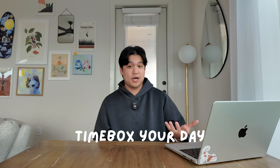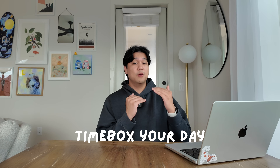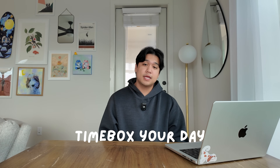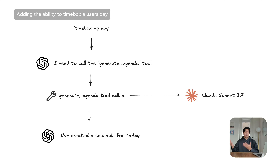The last thing I had it handle was the ability to time box your day. I thought this would be easy since it already has all the tools, but it was actually really challenging — I think because GPT-4o mini is a pretty small model and wasn't great at handling multiple calendar events simultaneously. So I created a specific tool that calls a more powerful LLM to handle that. That's a cool technique: you can define tools that are actually just other LLMs, chain them, and orchestrate complex workflows.